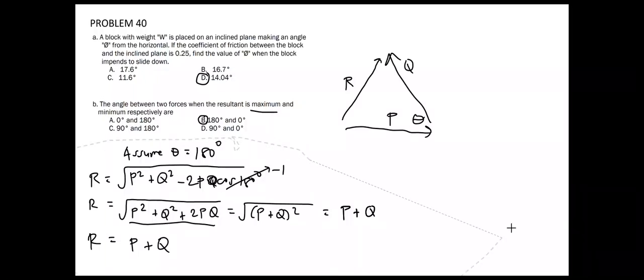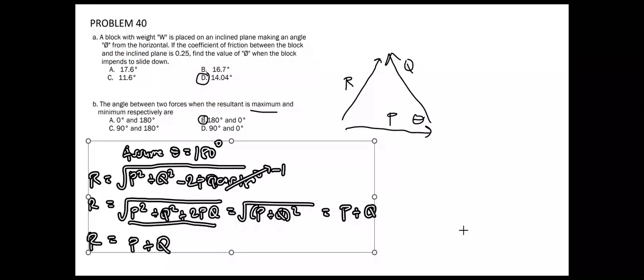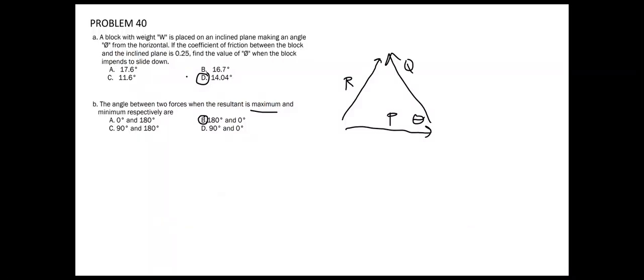Now, if we assume theta to be equal to 0, we get the resultant R is equal to square root of P squared plus Q squared minus 2 times P times Q cosine of 0. And cosine of 0 is just equal to 1. We get R equal to square root of P squared plus Q squared minus 2 P times Q.